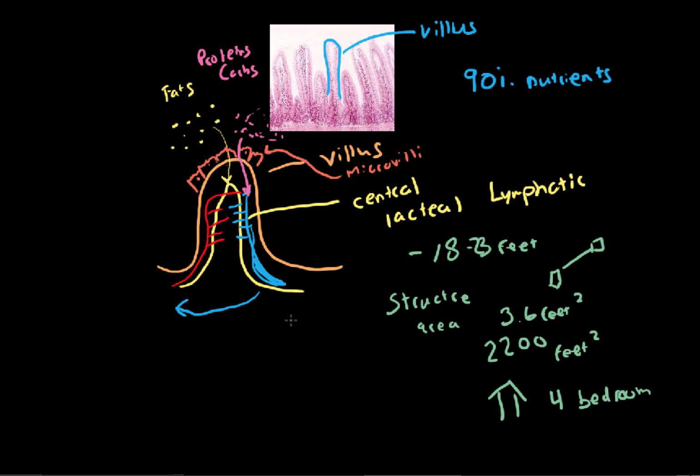And now you can see why 90% of the nutrients are absorbed here because of all the surface area. So if they ever say, how are the structure and function related for the digestive system? You can say, well, the small intestine, it's so long that gives it enough time to absorb all these nutrients.